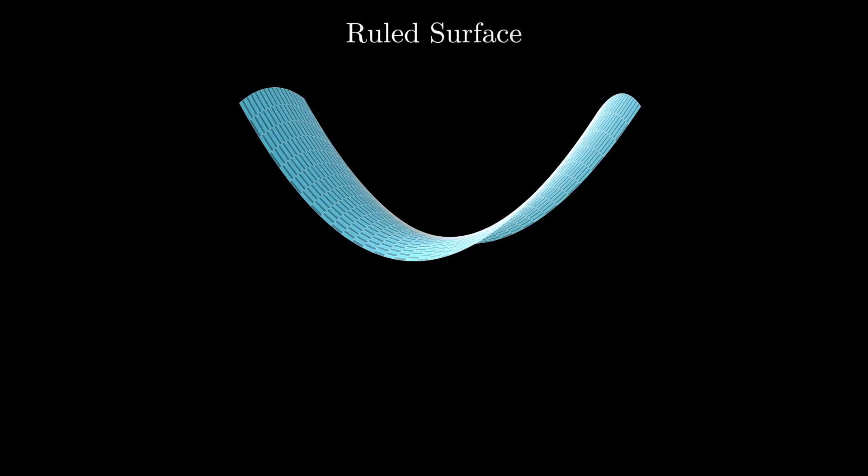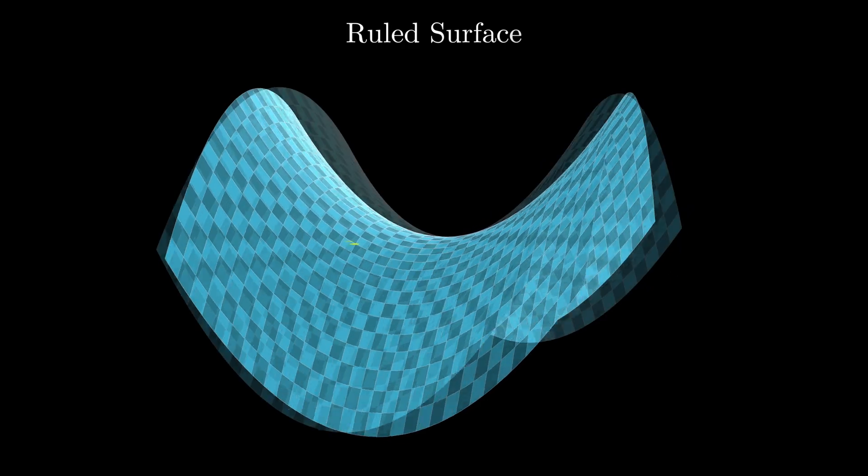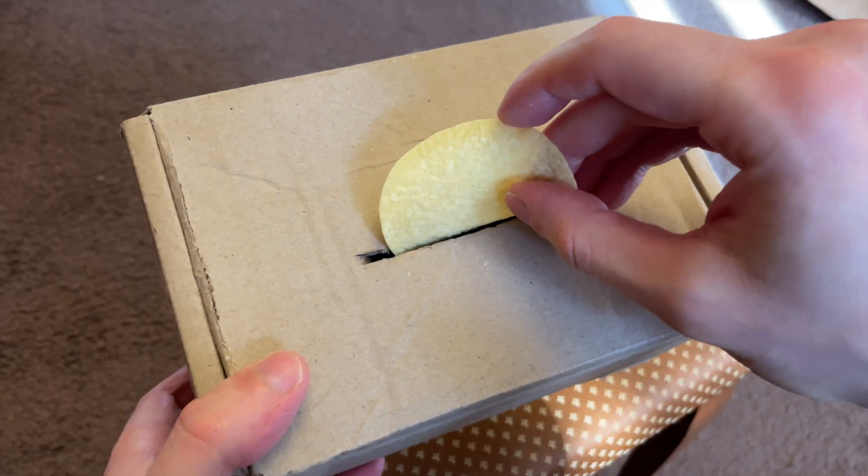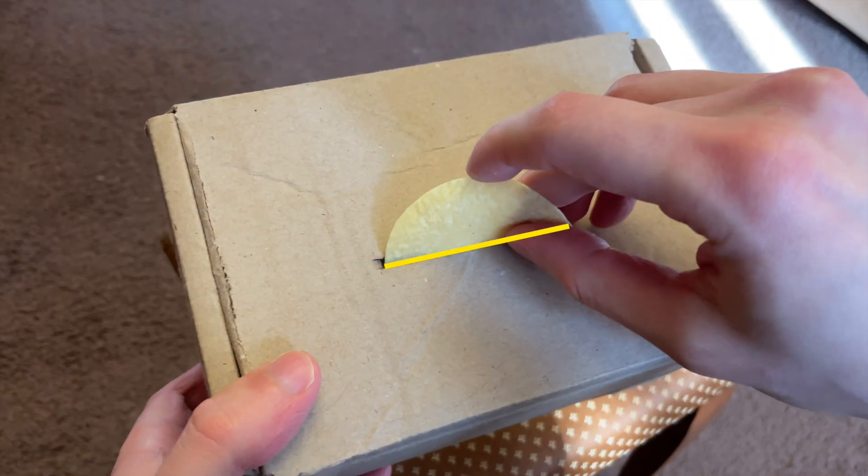Hyperbolic paraboloid is a ruled surface, meaning that for any point on it, there is a straight line lying entirely within the surface. So when you fit it through a slit, you simply find a new straight line with each move.